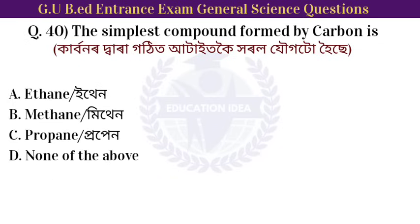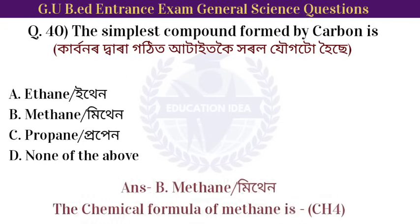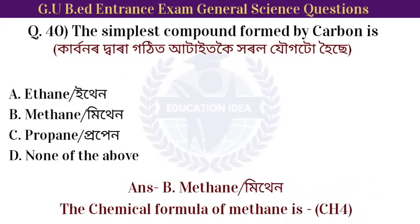Next question: the simplest compound formed by carbon is. Option: methane. The simplest compound formed by carbon is methane, whose chemical formula is CH4.